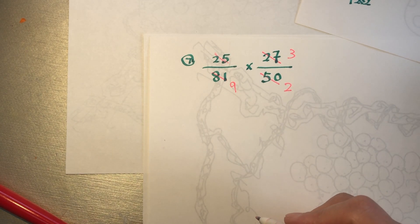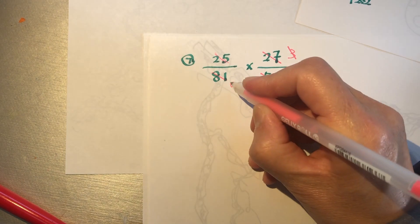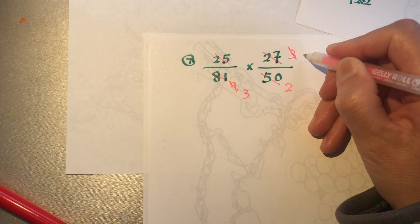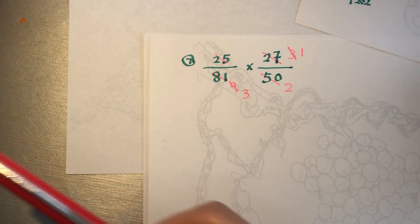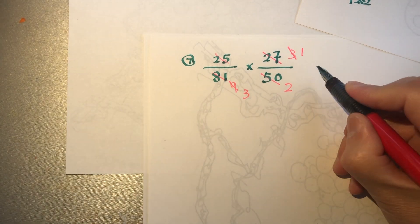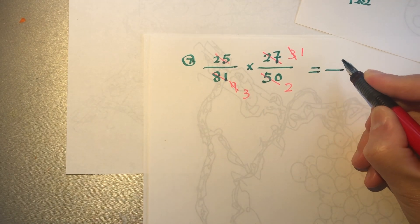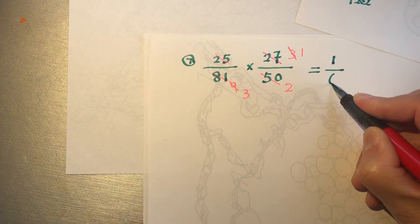Oh, why both divided by 9? We can still keep on. 3 and 1. So it becomes 1 over 6.